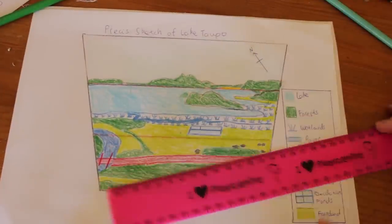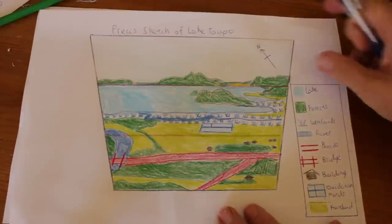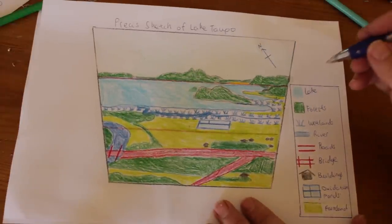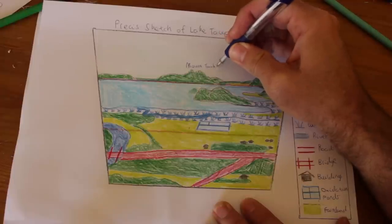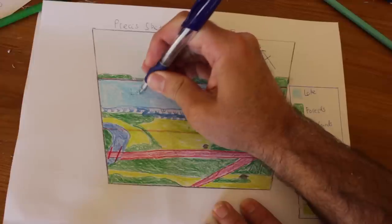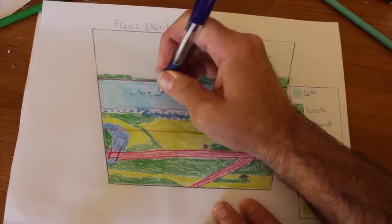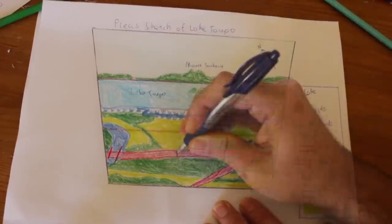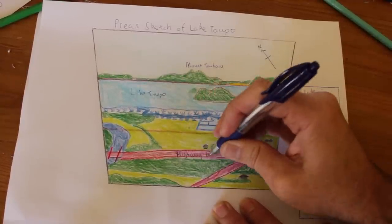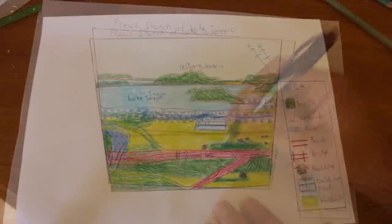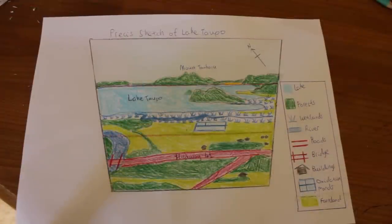And then finally now we want to annotate some of the main features, so we'll go Mount Tahara, Lake Taupo, Highway 41 and so on. And here is my completed sketch.